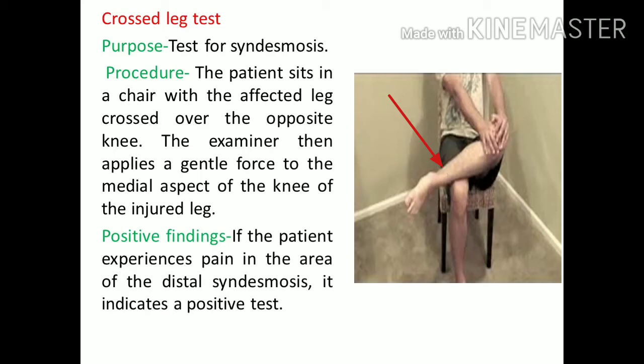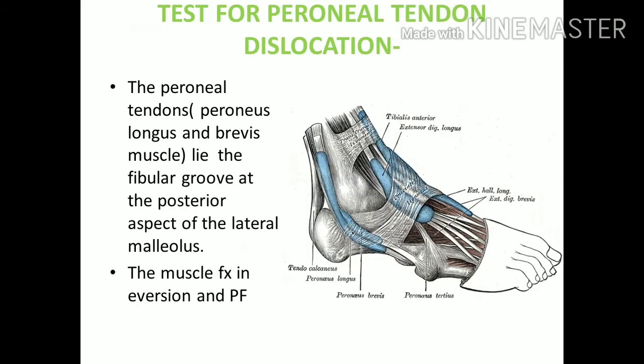The Crossed Leg Test exclusively checks the syndesmosis. If the previous tests suggest high ankle pain, this test can confirm it. The patient sits on a chair with the affected leg crossed on top of the other leg in a figure-of-four position. The examiner presses the knee downward, creating pain over the high ankle area — the tibio-fibular joint — confirming a syndesmosis sprain.